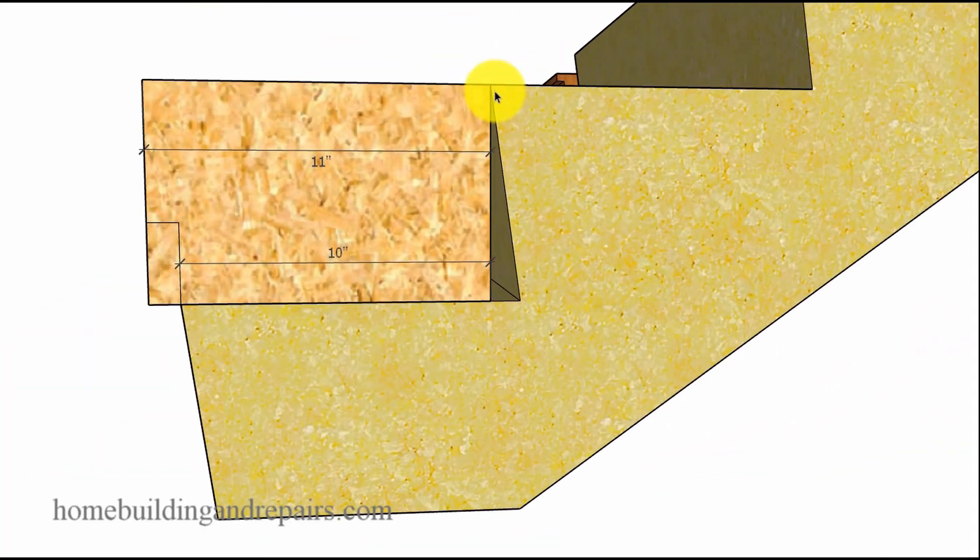Next example, we have a cutback or a setback in the stairway. So instead of having an overhang, we have a setback. An undercut is what we used to call them. So the front of the tip, the very tip of the stair tread to the very tip of the stair tread here is 10 inches.